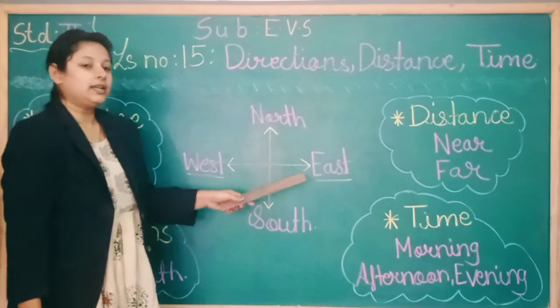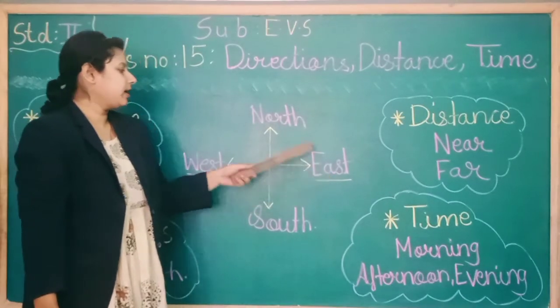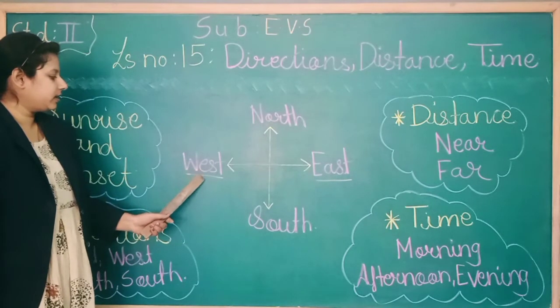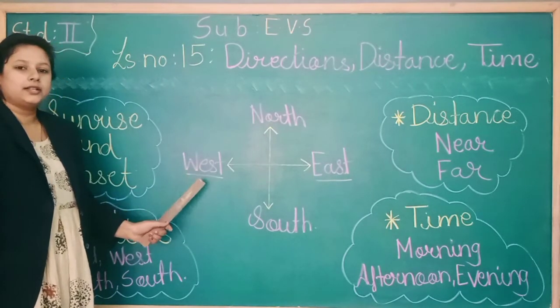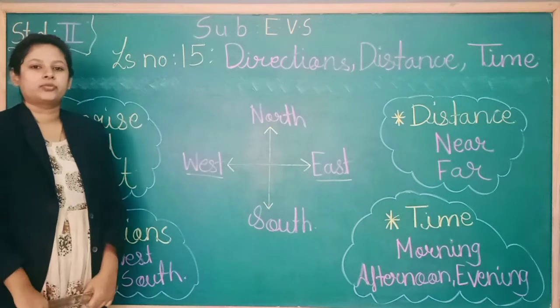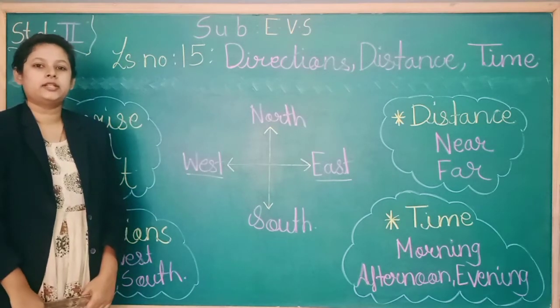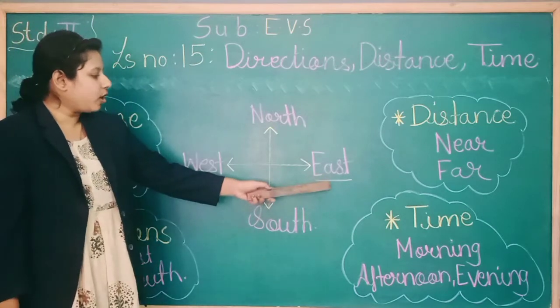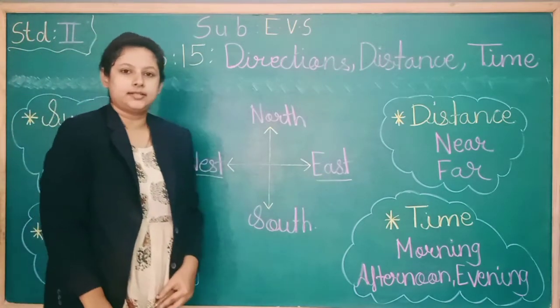When the sun rises in the east, it is called morning. And when the sun sets down in the west, it is called evening. The night starts from the evening when the sun sets in the west, and the day starts from the morning when the sun rises in the east.